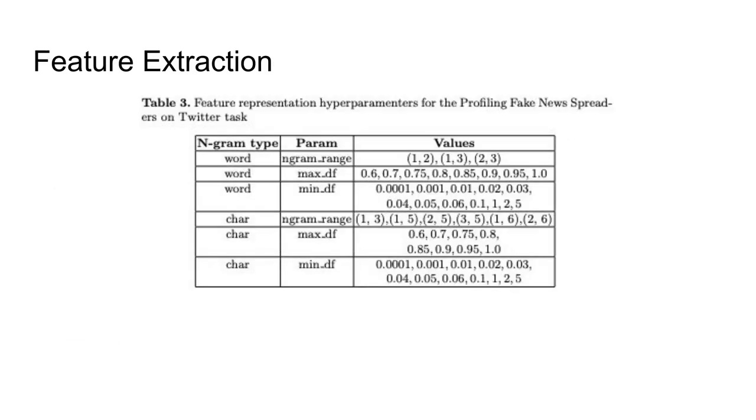A vector is obtained for each tweet feed, one per author. This vector is formed by the concatenation of two TFIDF vectors extracted using word ngrams and character ngrams. For both cases, a range of ngram orders is used.